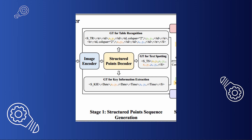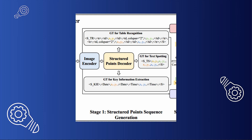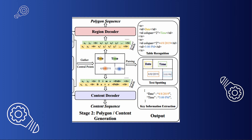Moving on to the unified encoder-decoder architecture: OmniParser employs a SWIN-B transformer-based architecture to generate hierarchical visual embeddings for the input images, capturing multi-scale features across text and layout components. It's worth noting that this encoder has been changed to using BLIP2 and FLORENCE models in the latest version of the code implementation. The output embedding feeds into three specialized decoders: a structure point decoder, region decoder, and content decoder. Each decoder focuses on distinct aspects — structured points for spatial relationships, region detection for layout, and content for text recognition — facilitating the simultaneous parsing of layout and text details.